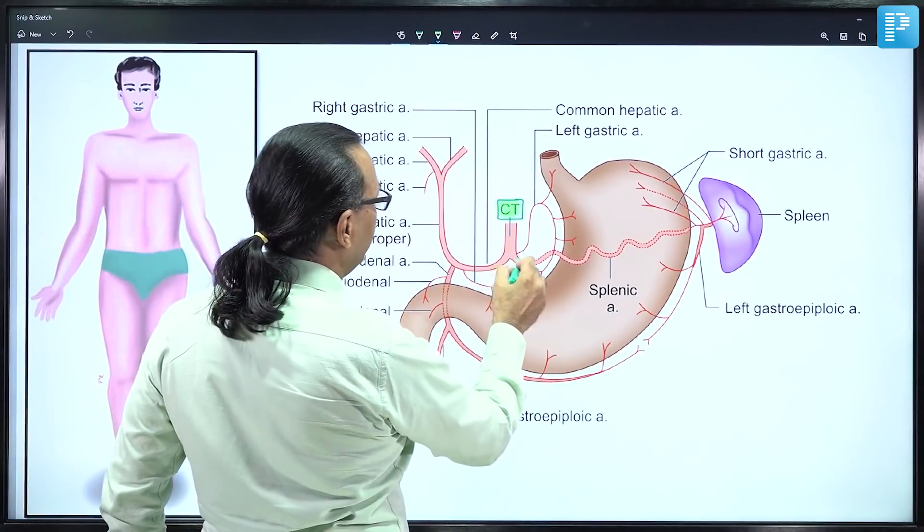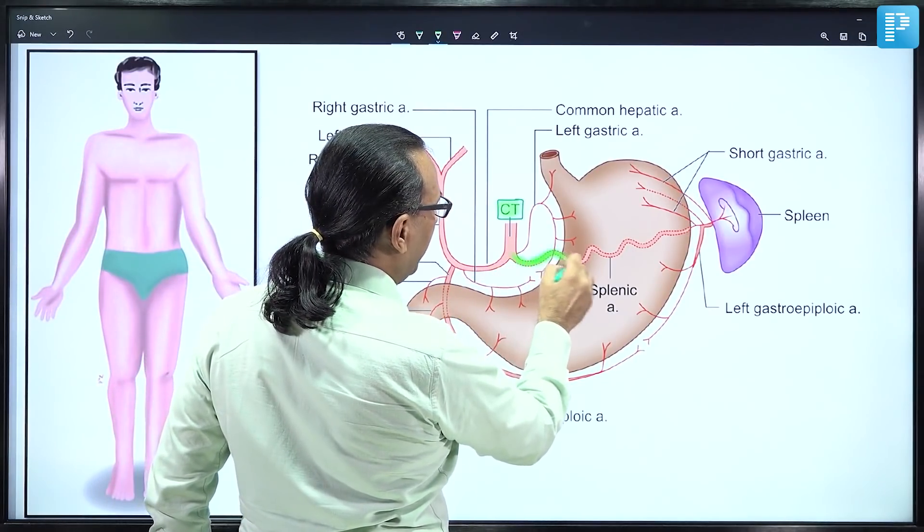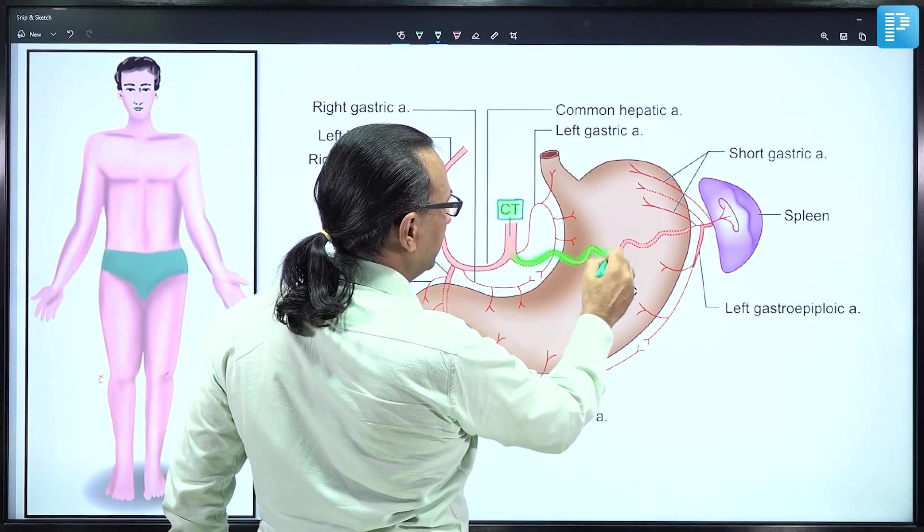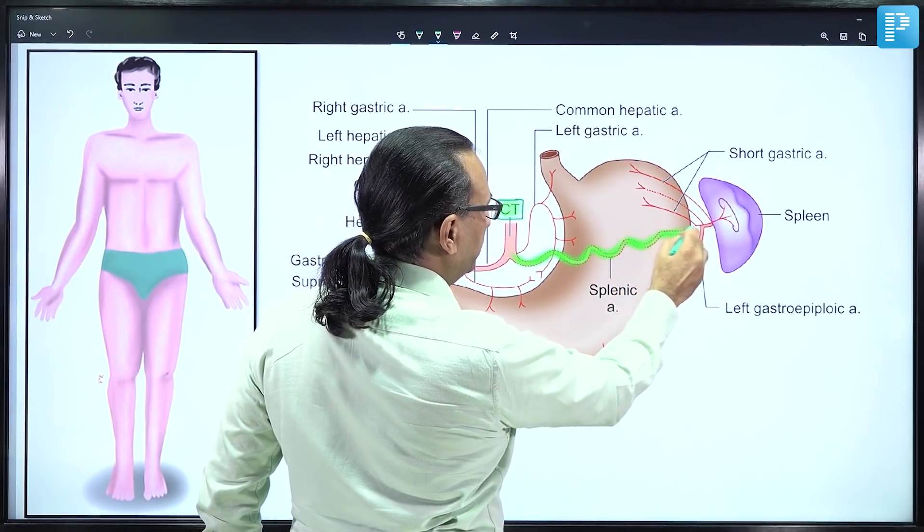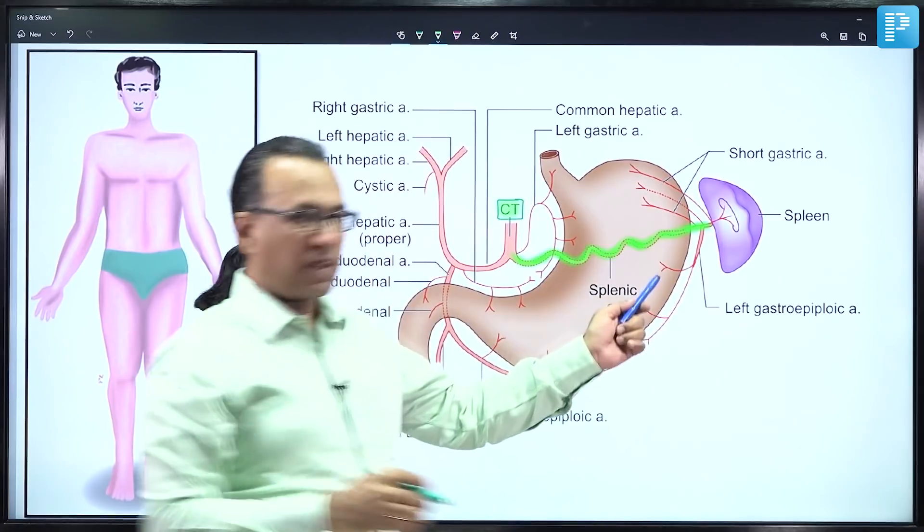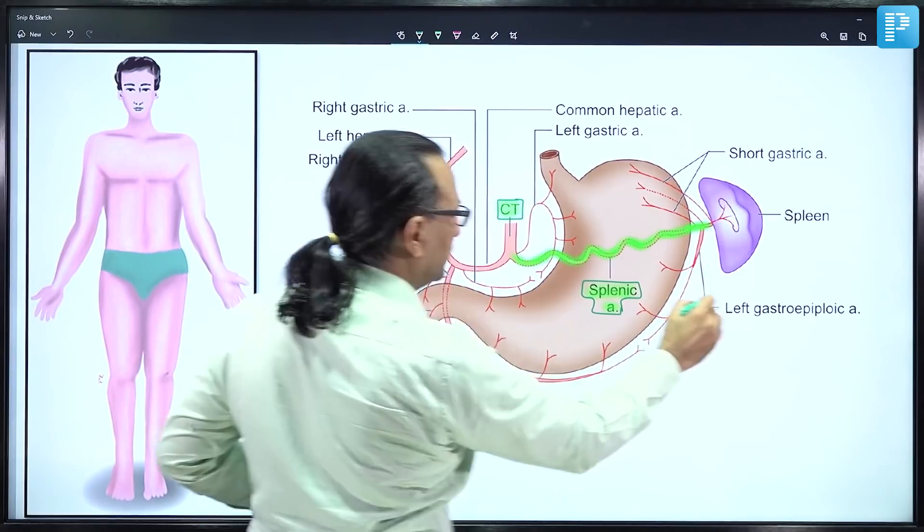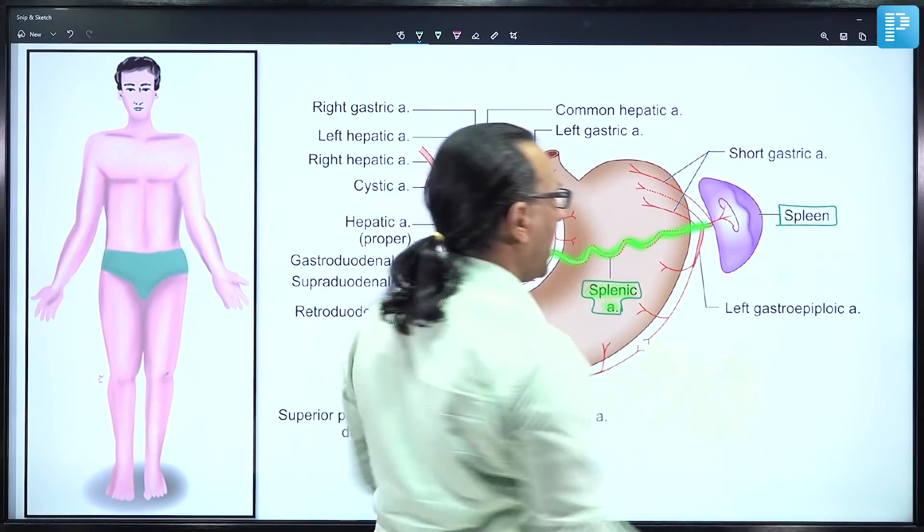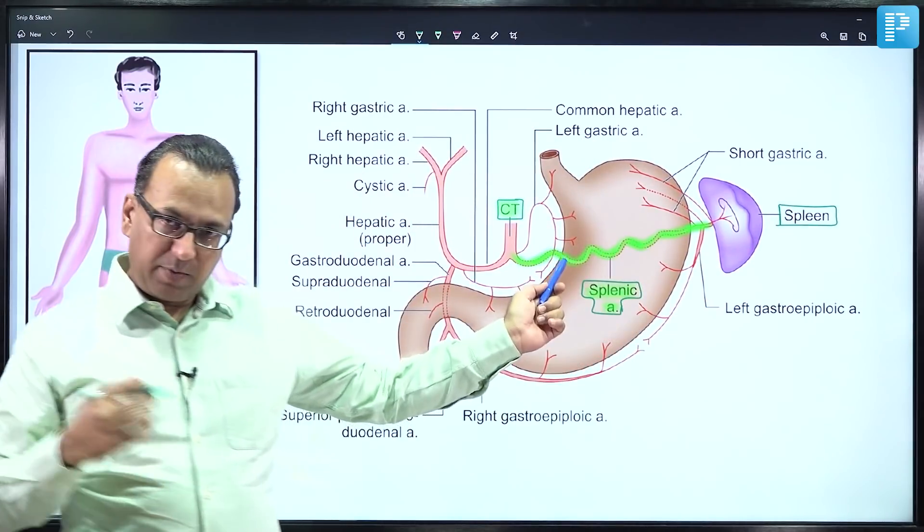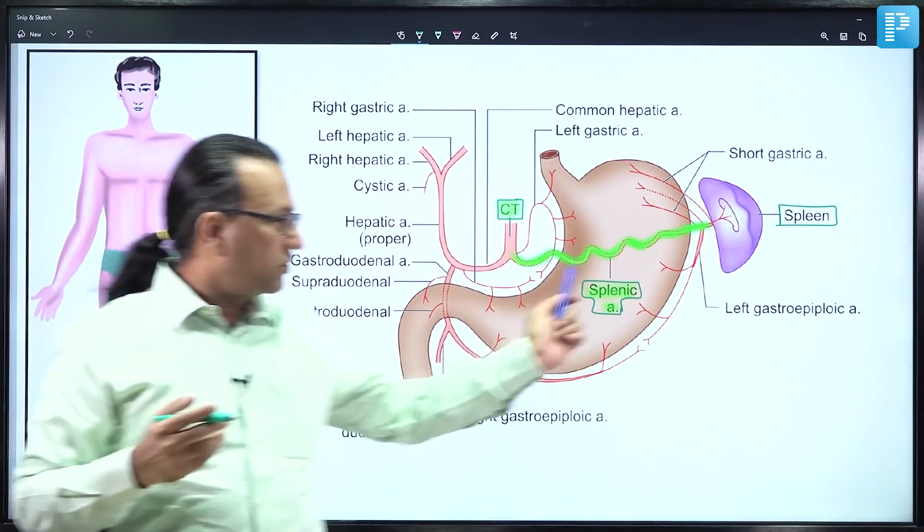The largest and most tortuous branch from the celiac trunk is the splenic artery, which runs behind the stomach in the stomach bed. It's tortuous to allow movement of the spleen. The splenic artery enters the hilum of the spleen but also gives multiple branches to both the spleen and stomach.